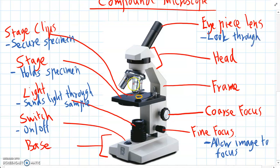And then further down there are three different lenses. One, two, and three. And these are called the objective lenses.